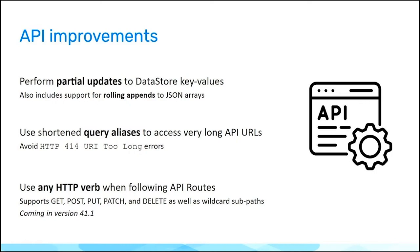With query aliases, you can access that data using a much shorter URL — essentially a shortened link. The final feature, coming in version 41.1, is the ability to extend API routes to support other HTTP verbs like POST and DELETE, which are very useful when talking to an external service.